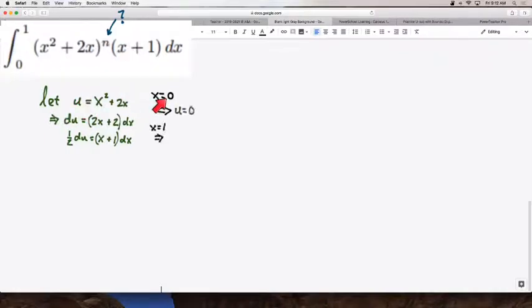So, I'm going to make sure when x is 0, I find out what u is, that's going to be 0 as well, 0 squared plus 2 times 0, and when x is 1, u is going to be 3, it's 1 squared plus 2 times 1. So, now I can change my boundaries from 0 to 3 instead of 0 to 1,